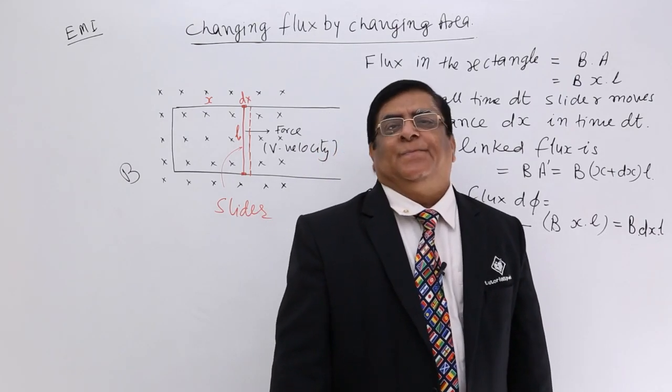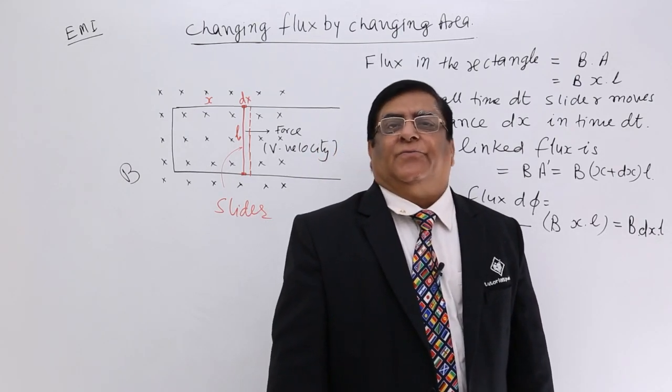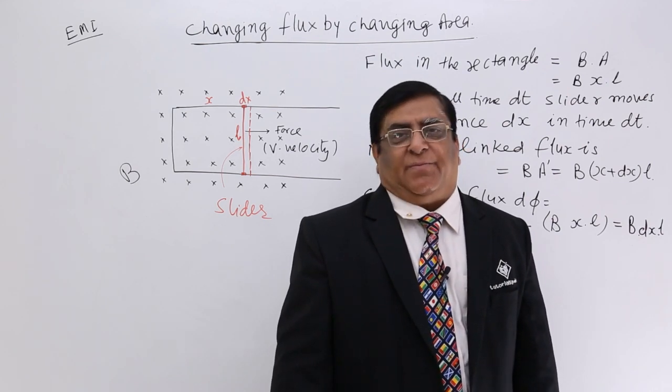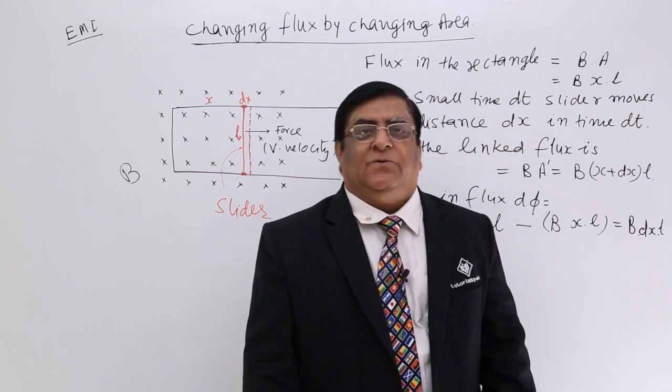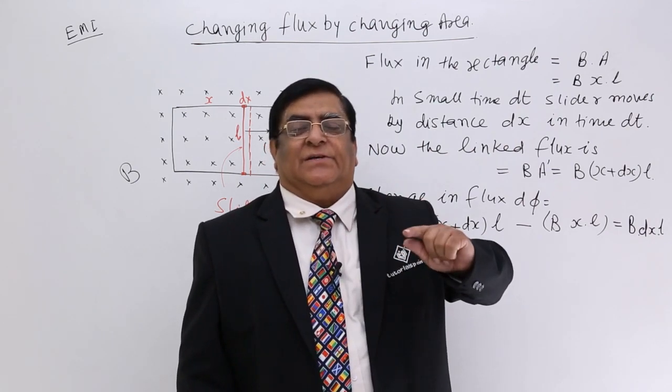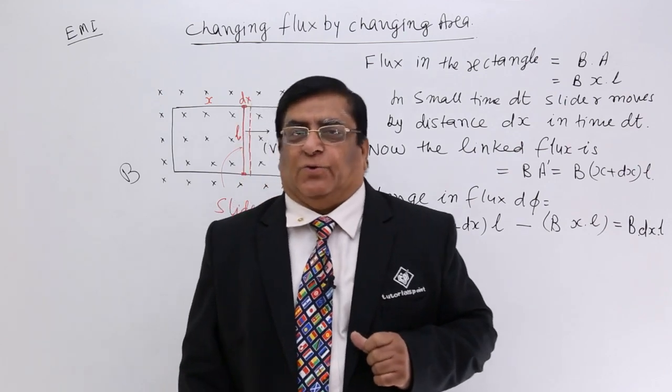Now we will see the second case how area of a coil when it is changing leads to induced EMF. The area which is linked with the magnetic field keeps on changing, then EMF is induced and current flows.